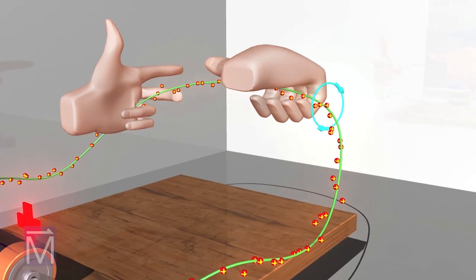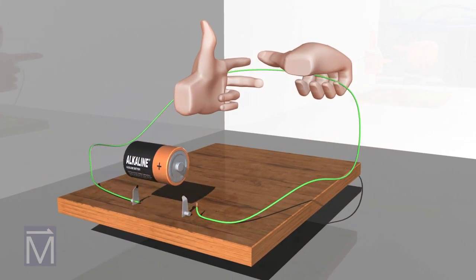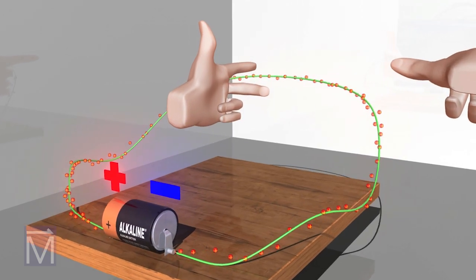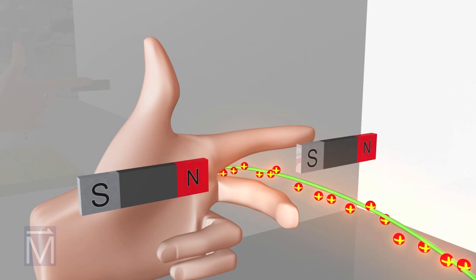We need to reverse the direction of the current to illustrate the other concept. We also need a magnetic field to explain what's happening. These two magnets provide that field, depicted here by the blue lines.